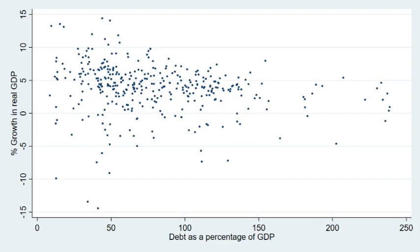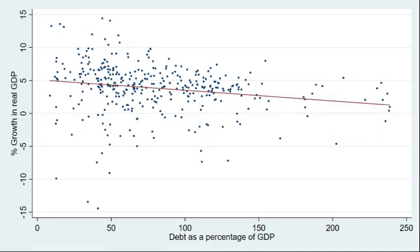In order to investigate this, we've collected data from 2008 to 2018 on debt as a proportion of GDP and growth in real GDP. We've run a simple naive regression of GDP growth against debt as a proportion of GDP.